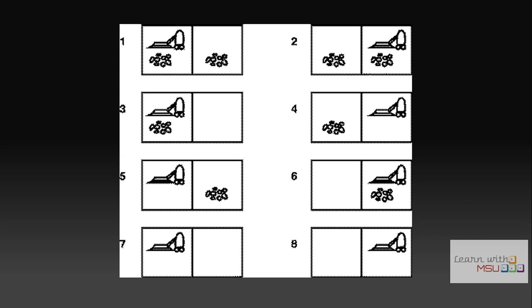Consider the vacuum cleaner world problem. A vacuum cleaner is available in one of two rooms, A or B. Each room may or may not be dirty, giving eight possible states. These range from both rooms dirty with the cleaner in room A, to both rooms clean with the cleaner in either room. Any of the eight states can be the initial state, but the goal state must be state 7 or 8 — where both rooms are clean — regardless of which room the cleaner is in.